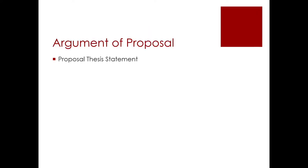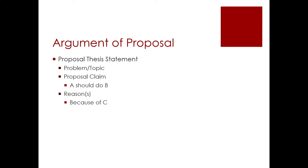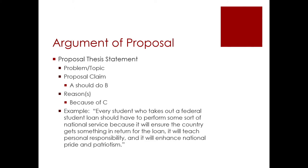Let's review what is an argument of proposal. A proposal thesis statement identifies a problem or topic, makes a claim, and that claim is usually written as 'A should do B' or 'A should not do B.' The reasons or main points are the 'because of C' portion of the formula. For example: every student who takes out a federal student loan should have to perform some sort of national service because...